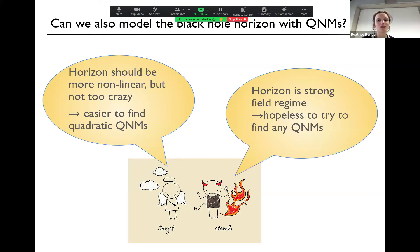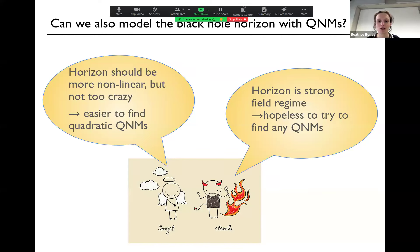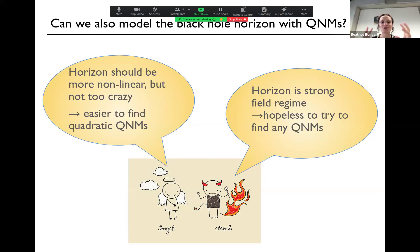The devil in me said: wait, the horizon is the strong-field regime, so it should be hopeless to even try to find any quasi-normal modes. You should not even try, because black hole perturbation theory should not be valid in any way. Luckily, I had a very brave student willing to look at numerical simulations and try to extract this at the horizon. So we know the answer, and I'll tell you soon.